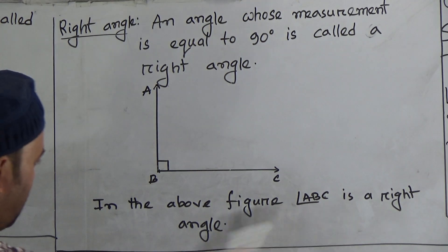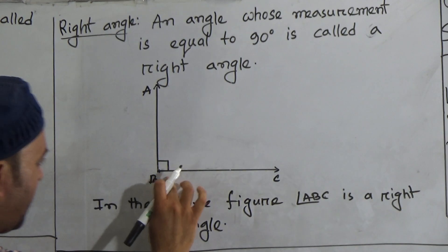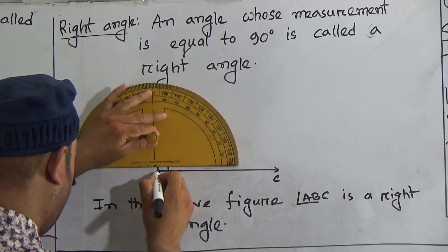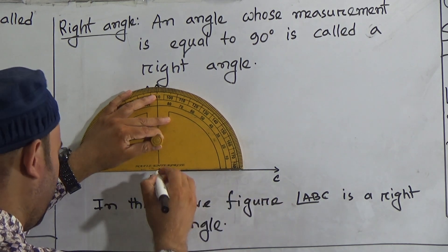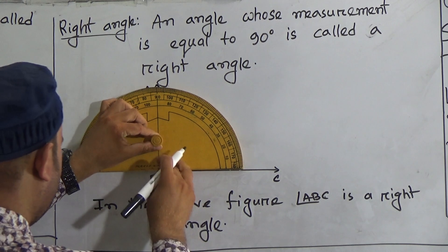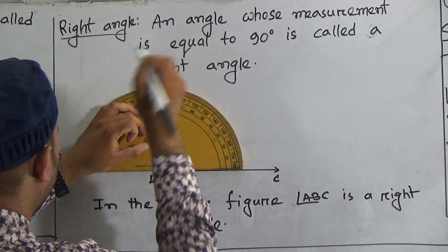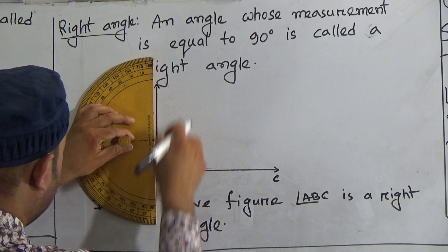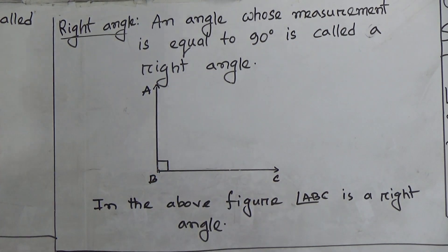This is a right angle, my dear students. Look how to draw a right angle again, because it is very important. First of all you have to draw a ray BC, then put the center point of the protractor on the starting point of your ray, find the 90 degree mark, put a point there, join that point to get angle ABC, which is a right angle.